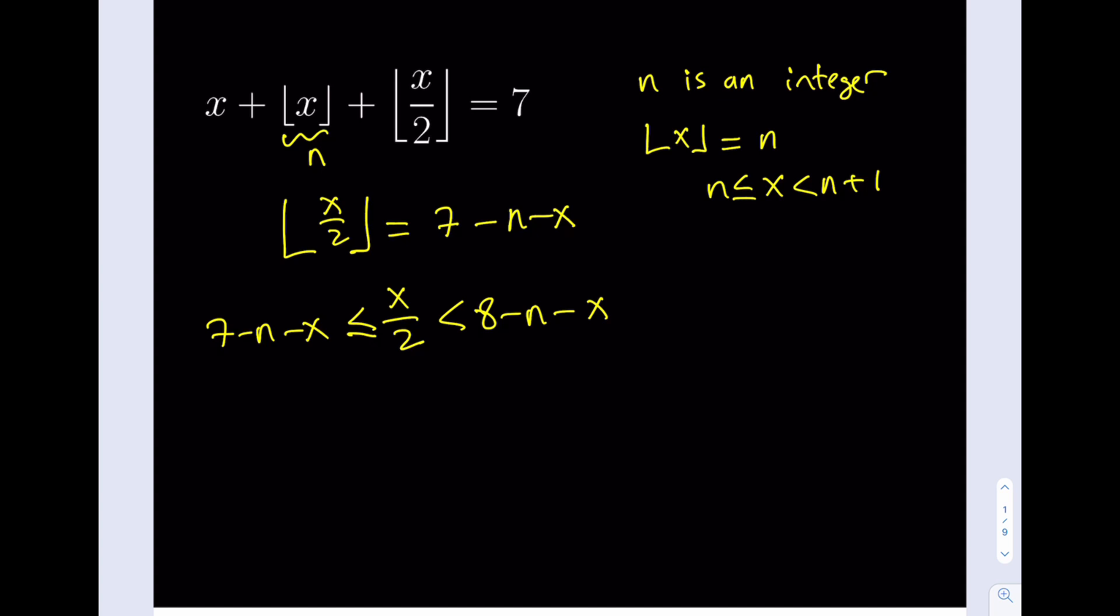Now, what does this give us? Let's go ahead and multiply everything by 2. That should give me 14 minus 2n minus 2x less than or equal to x. And that's less than 16 minus 2n minus 2x. Again, I'm multiplying everything by 2.